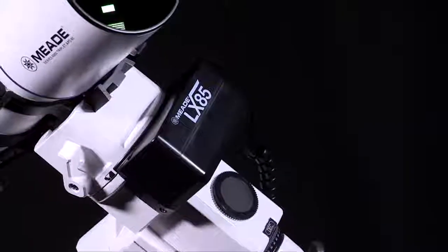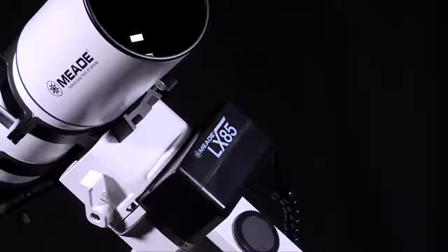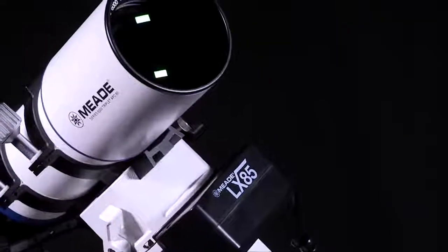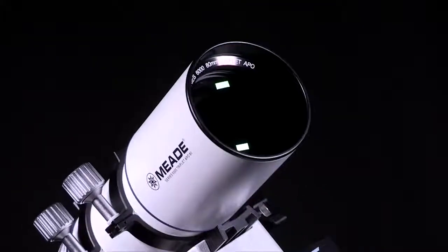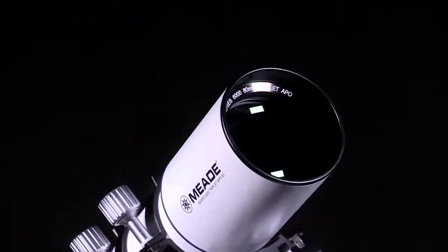If a higher precision alignment is needed, try using the one-star alignment routine found in the AudioStar handbox. This alignment method will have you more accurately align the mount's right ascension axis on the celestial pole for higher accuracy.